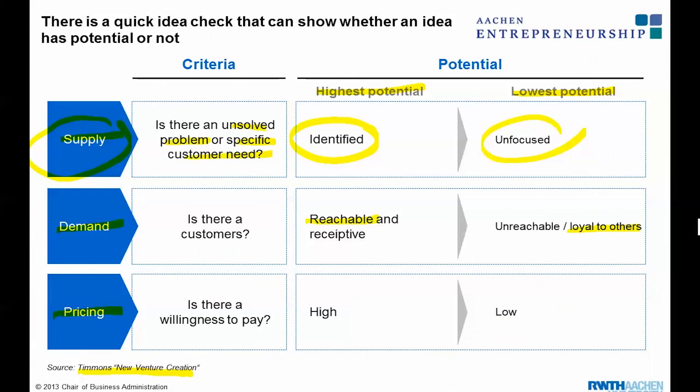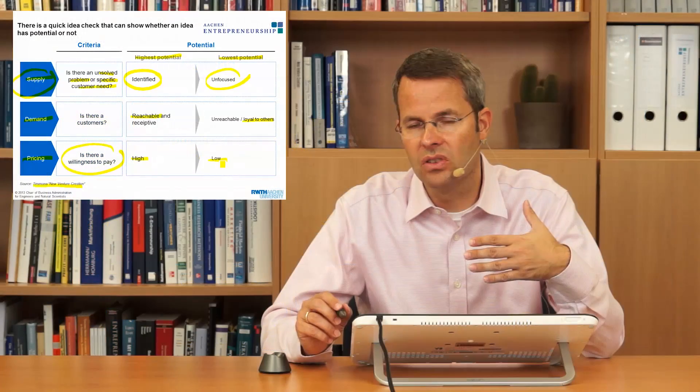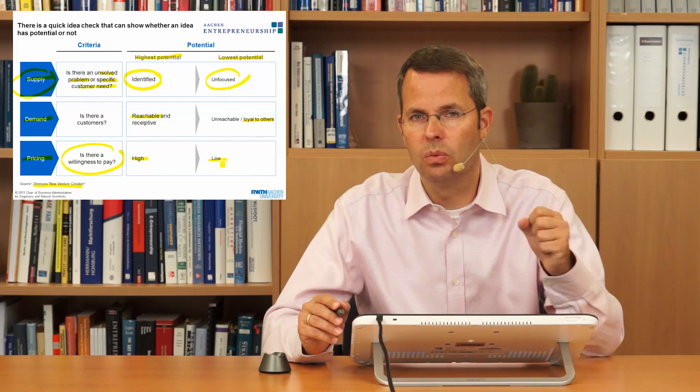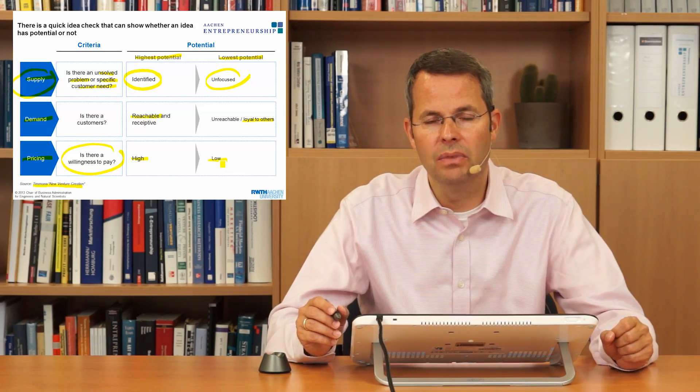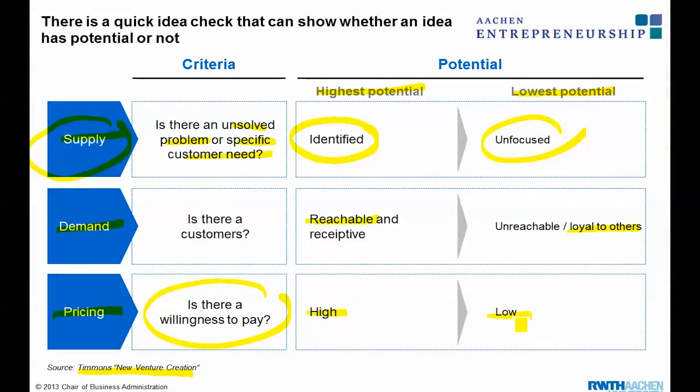And the third point is their willingness to pay, as we said before. Is willingness high or at least high enough or low? So this is basically the same questions in a slightly different way as you can find them in Jeffrey Timmons' book on New Venture Creation.